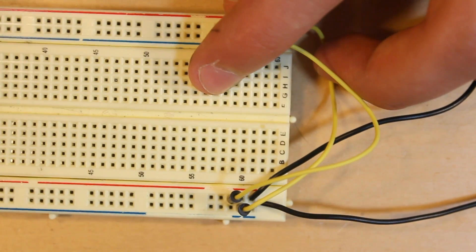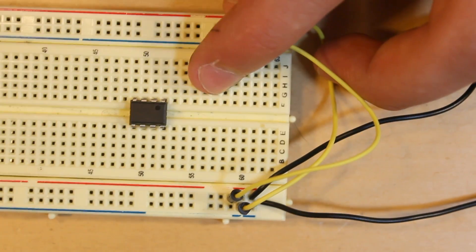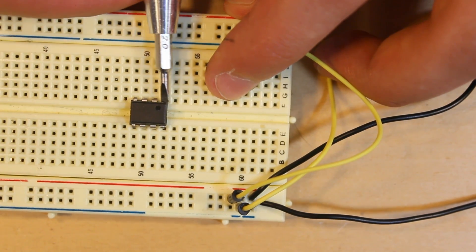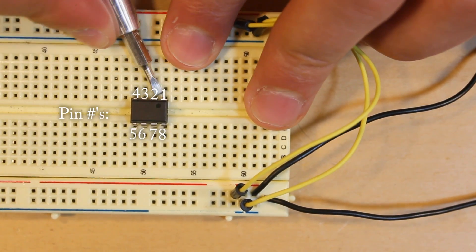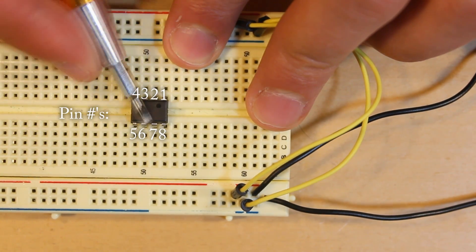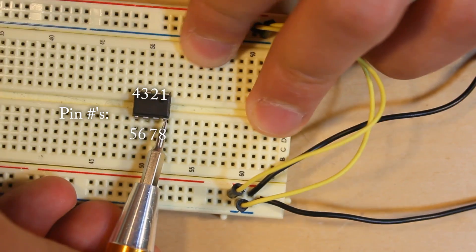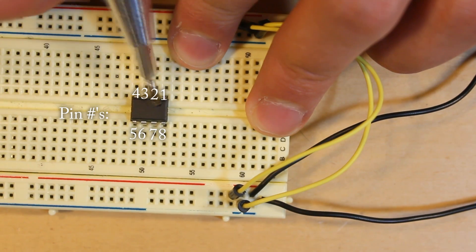Next, we're going to take our 555 timer and pop it into the breadboard. Make sure that the little dot at the top is right here, because this is pin 1, pin 2, pin 3, pin 4, pin 5, pin 6, pin 7, and pin 8.